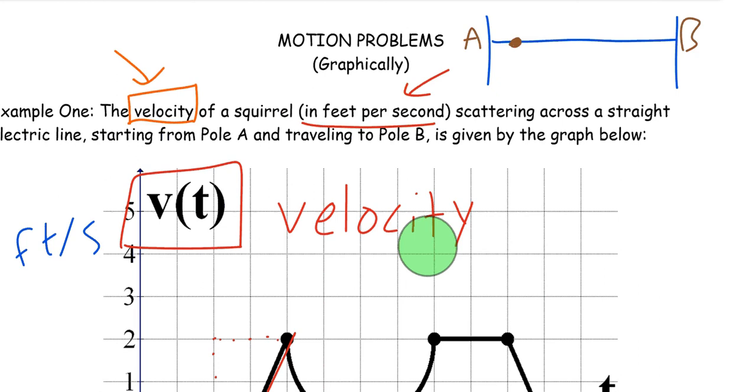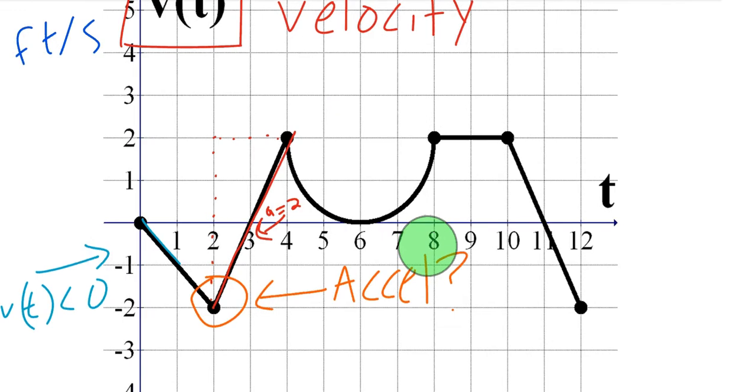Again, the question we're asking is when does it change direction? And it's when the velocity changes sign. So automatically, we can look at this graph. What about at T equals 0? Does it change sign? Actually, it doesn't because it goes from 0 to negative, so that's not actually changing sign. It has to go from positive to negative or vice versa.